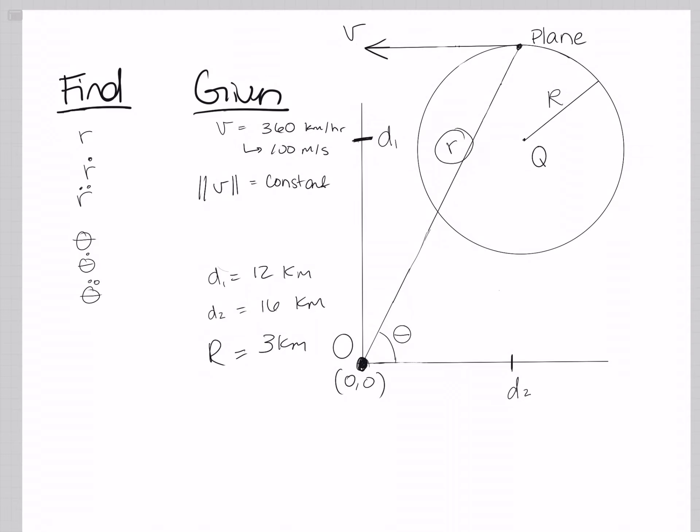We're defining R, R dot, and R double dot, with this being R, and theta, theta dot, and theta double dot, with this being the theta. We're not given any information about R or theta directly, but we can find it with what they have given us.